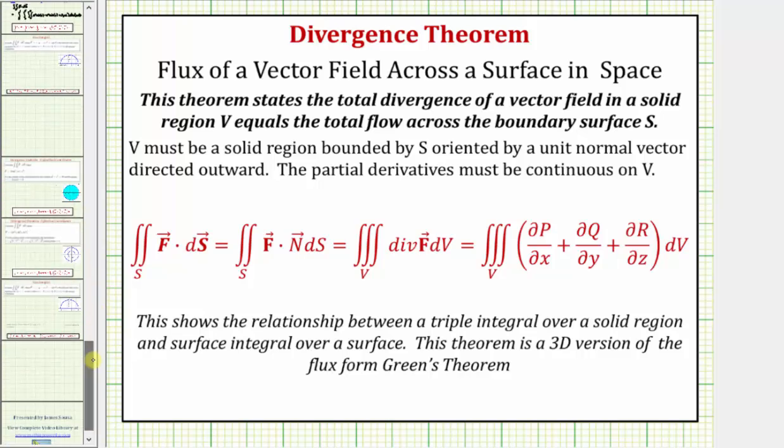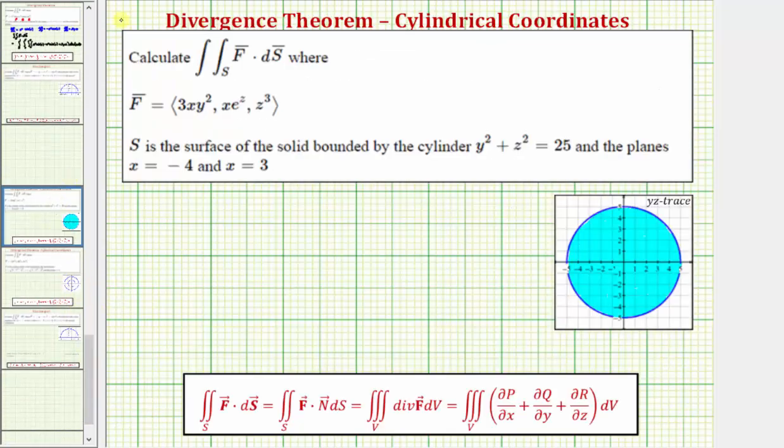So going back to our example, looking at the vector field F, our formula: p = 3xy², q = xe^z, and r = z³. So let's go ahead and find these partial derivatives.